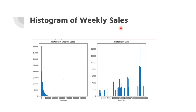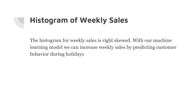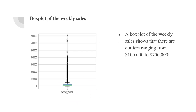The histogram of weekly sales shows that the weekly sales are very right-skewed, and ideally we would like the data to be more normally distributed or left-skewed so that it correlates with higher weekly sales. With our machine learning model, we can increase weekly sales by predicting customer behavior during holidays. The box plot of weekly sales shows that there are outliers ranging from $100,000 to $700,000 and a majority of the data is near zero. We would like to see weekly sales spread out toward the higher values, and our machine learning model will help accomplish that goal.